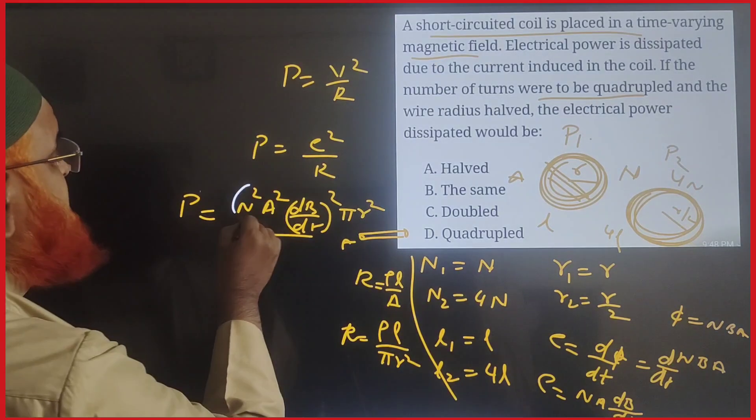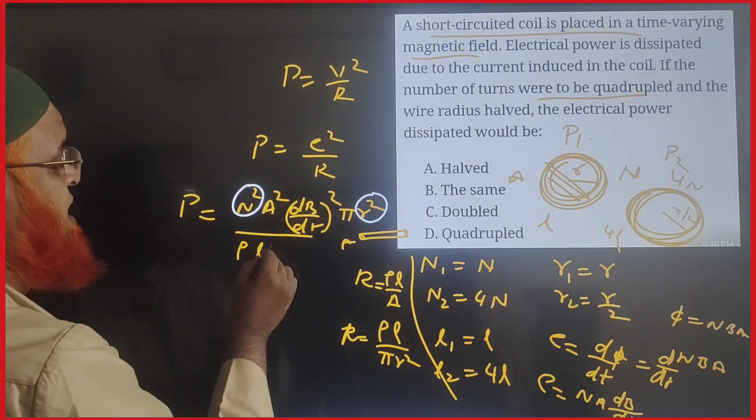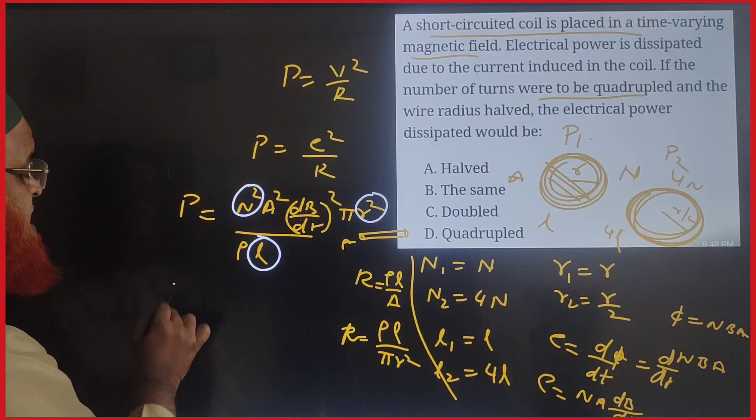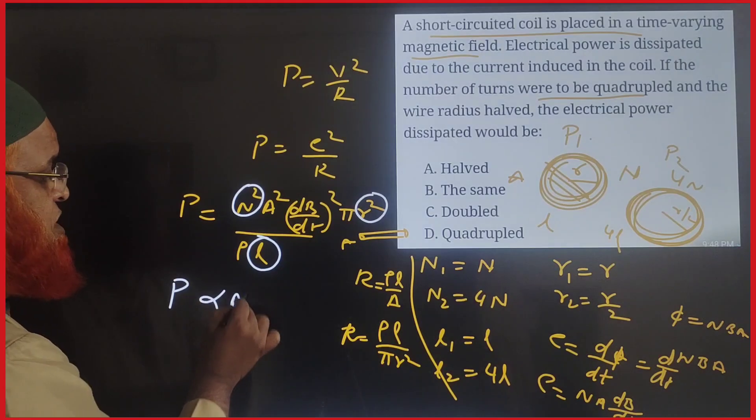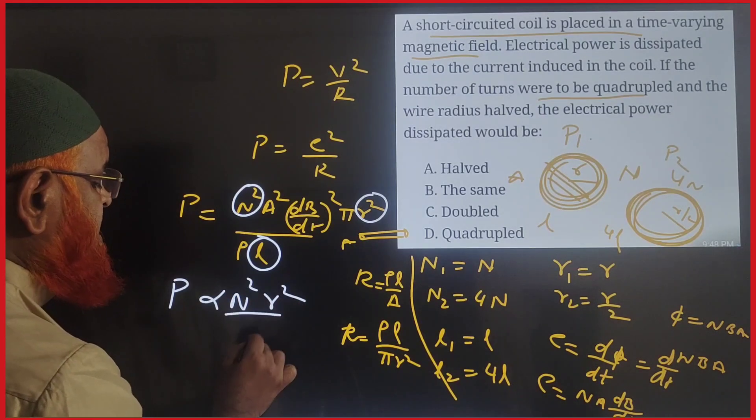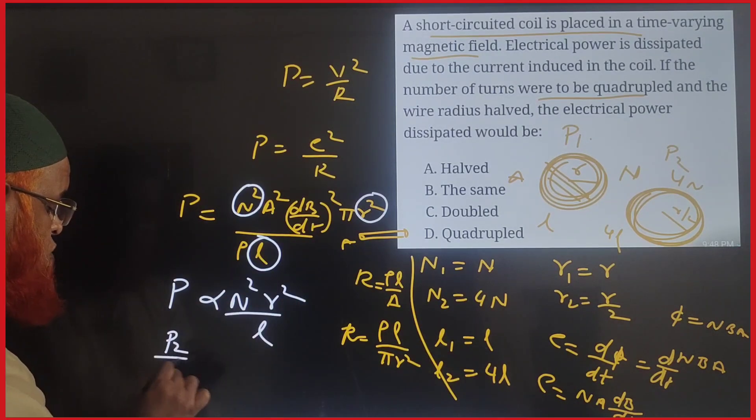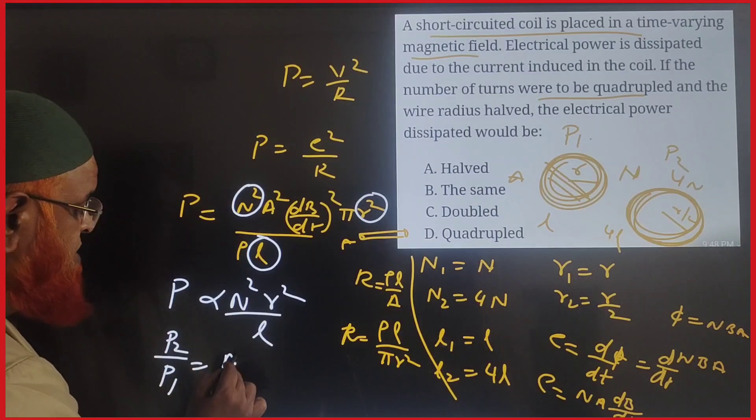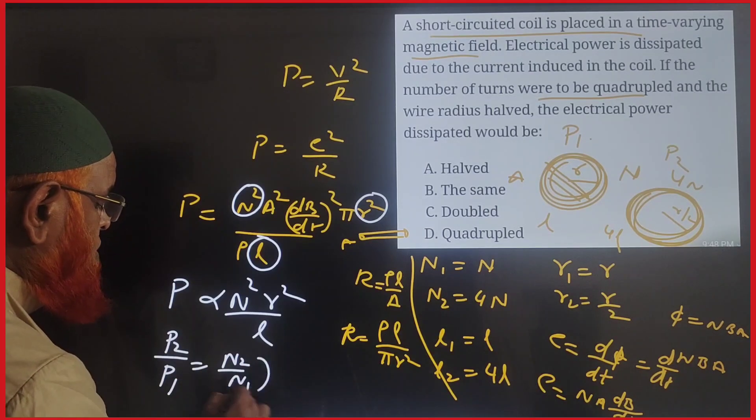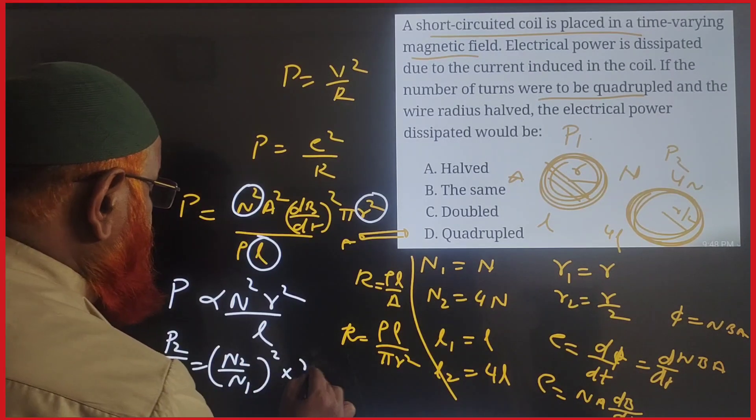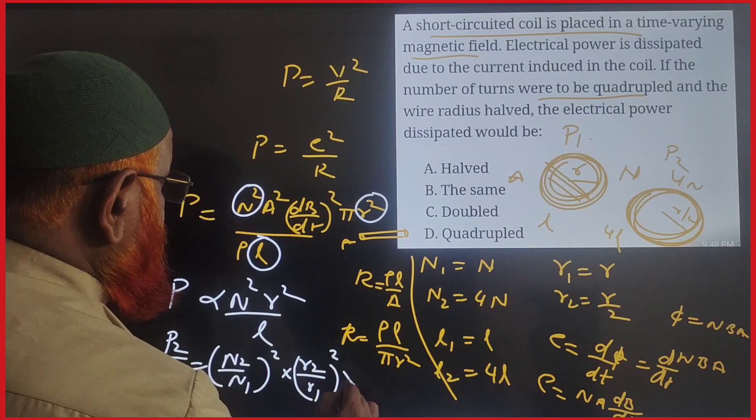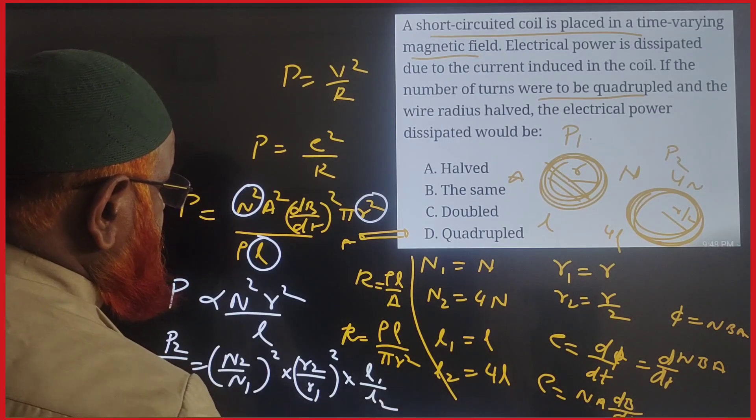So we can write P is directly proportional to n²r²/l. Therefore P₂/P₁ = (n₂/n₁)² × (r₂/r₁)² × (l₁/l₂).